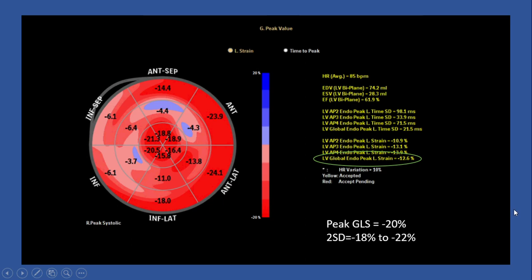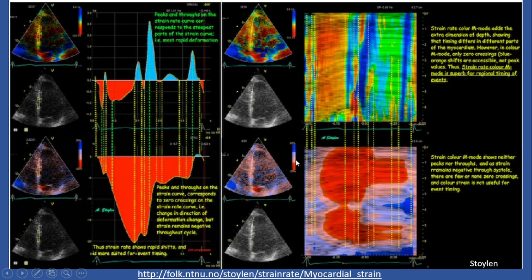As mentioned, here we can see the differences between strain rate curve and color M-mode compared to strain curve and color M-mode. In strain rate, we see more detail — including E prime, A prime changes, IVRT, IVCT, and ejection time. On the strain curve and color M-mode, we don't see as much of those details. In other words, strain rate is more sensitive to event timing. If you want to learn more, there is a reference site with a lot of useful information.